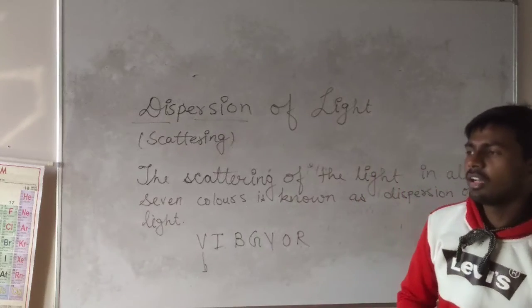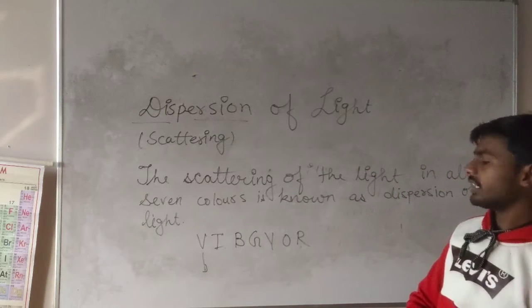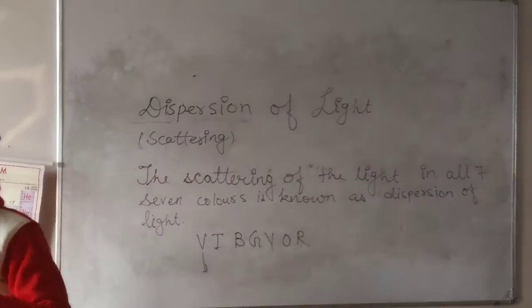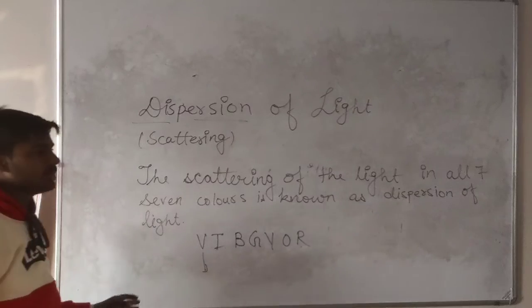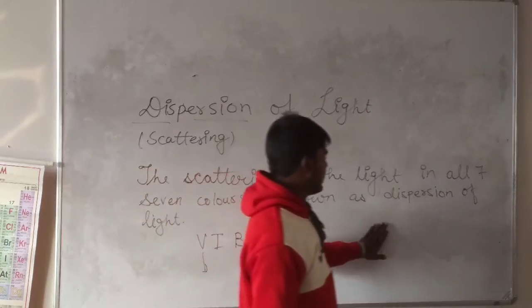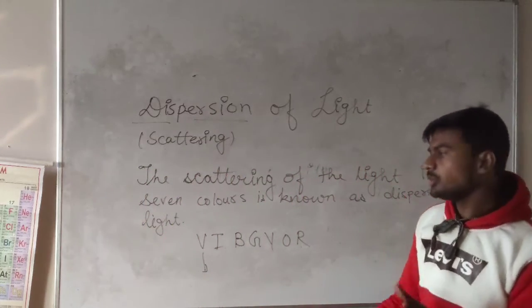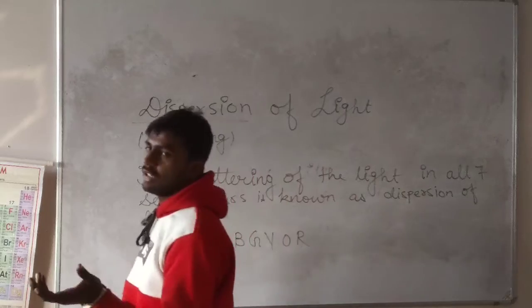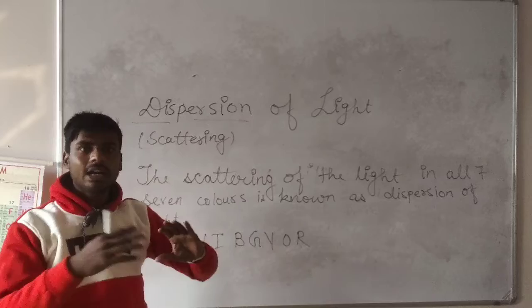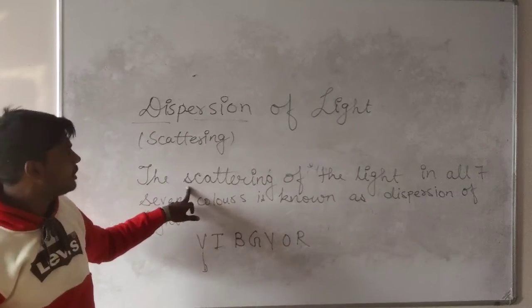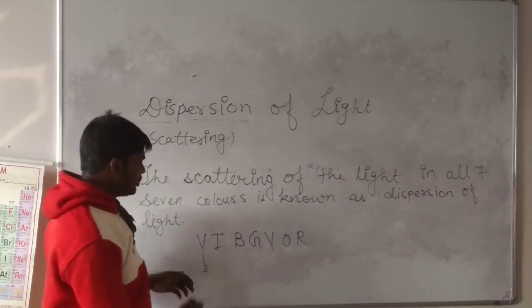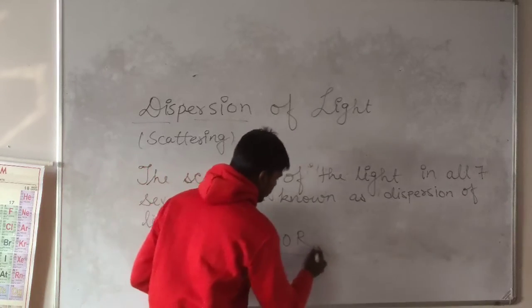And that is why you have noticed that rainbow appears after rainfall. What happens after rainfall is tiny droplets are found in the air in the form of mist. When sunlight passes through these droplets, dispersion of light takes place, and we are able to see all seven colors.